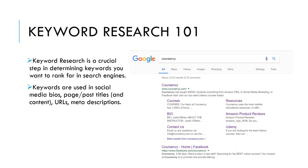Keyword research is a crucial step in determining keywords you want to rank for in search engines. Keywords are used in social media bios, page and post titles, and within the content on those pages, within URLs, within meta descriptions,